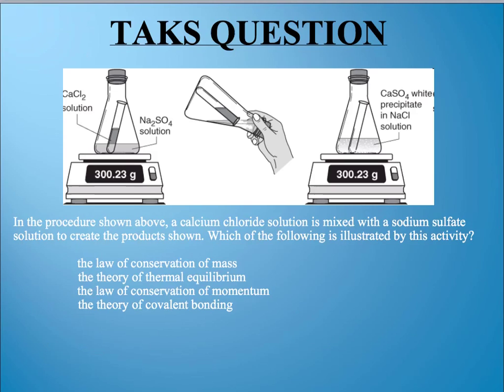So here's the kind of question you might see on a test having to do with the law of conservation of mass. So it says, in the procedure shown above, a calcium chloride solution is mixed with a sodium sulfate solution to create the product shown. Which of the following is illustrated by this activity? Well, this is kind of an easy question, because obviously what we're talking about is law of conservation of mass, so that's the answer.